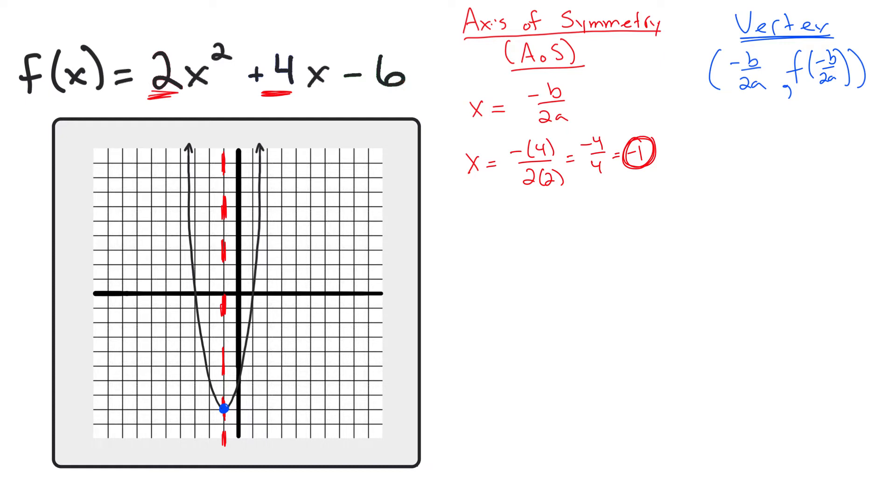So I'm going to take that negative 1 and plug it back into the function f. So f of negative 1 is going to be 2 times the quantity of negative 1 quantity squared plus 4 times the quantity of negative 1 minus 6. That's going to be equal to 2 minus 4 minus 6, which is equal to 2 minus 4 is negative 2. Negative 2 minus 6 is negative 8.